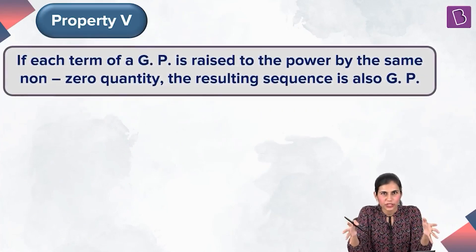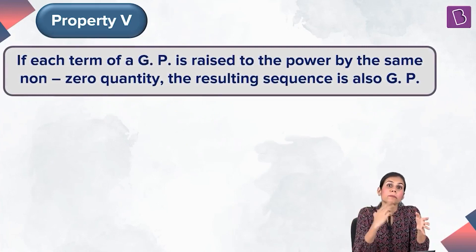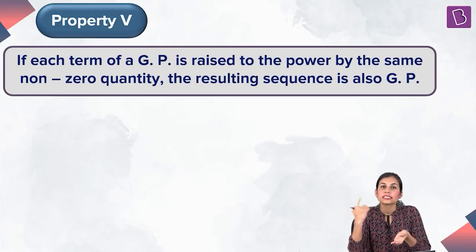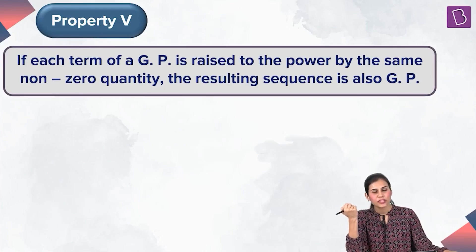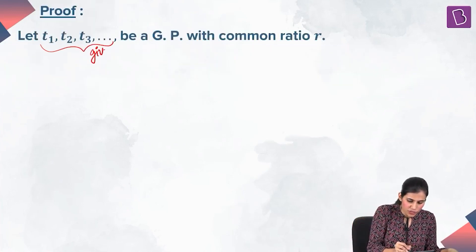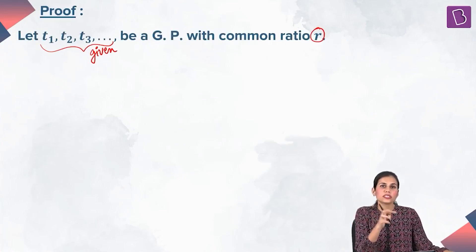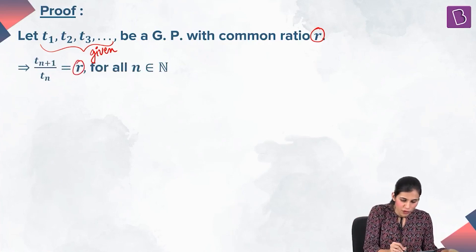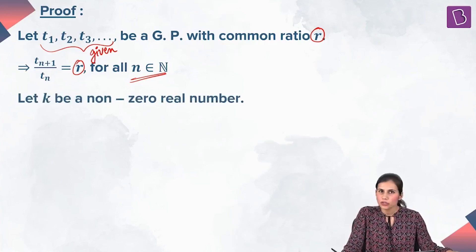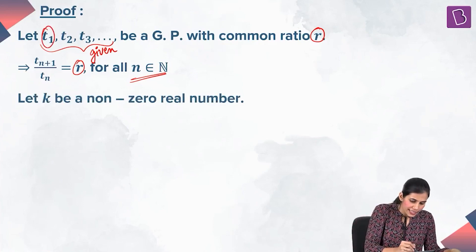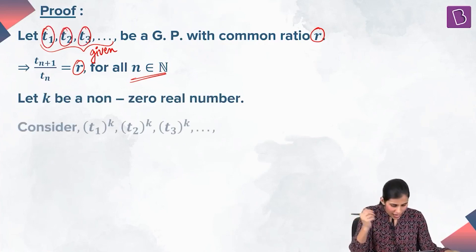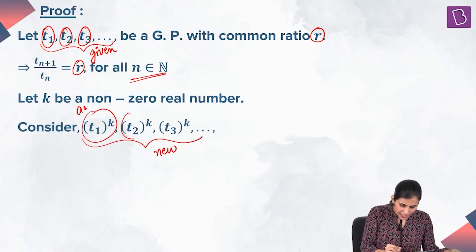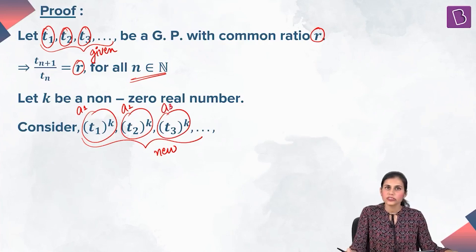The next property says that if you have a GP and you raise each term to the power of the same non-zero quantity, the resulting sequence is also a GP. Suppose this is the given sequence — a GP with common ratio R — meaning the ratio of the (N+1)-th term to the N-th term equals R for every N in the naturals. Let K be some non-zero real number. Raise each term to the power K to get the new sequence: T₁^K, T₂^K, T₃^K, and so on.